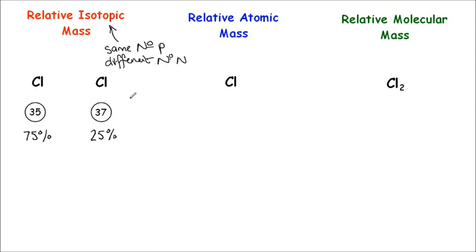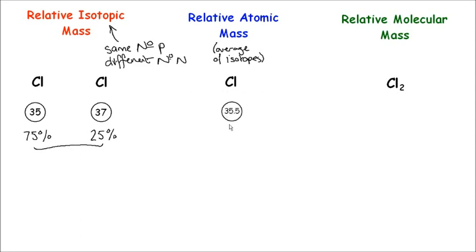This is where the second term becomes important — the relative atomic mass. This is the average mass of the isotopes of an element. For chlorine, this would be the average mass of these two isotopes. If we average them out, taking into account their abundances, chlorine has an average mass of 35.5. That's why in the periodic table chlorine says 35.5. It doesn't mean there's half a proton or half a neutron — it's just the average of the relative isotopic masses.